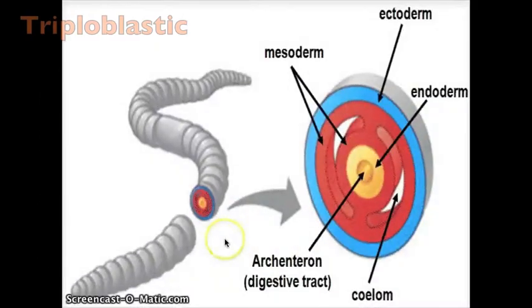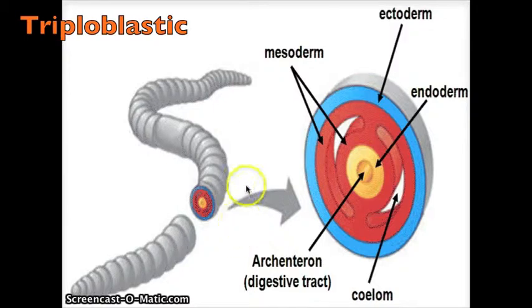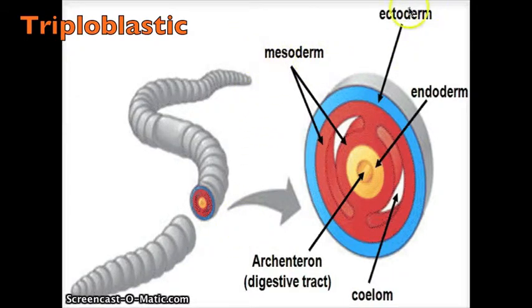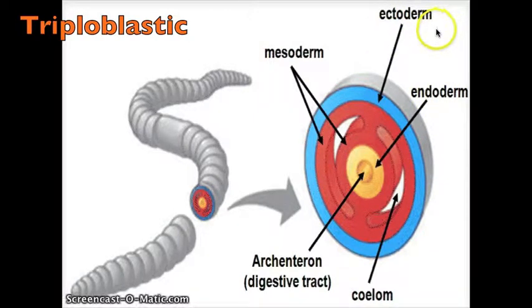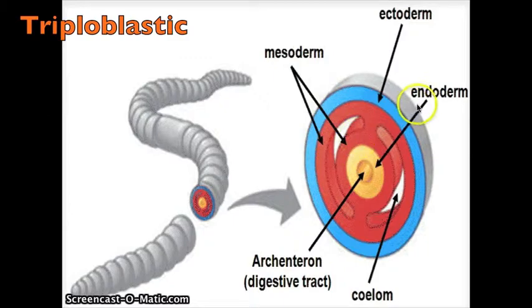This diagram shows a cross section of the layers within an earthworm. An earthworm is triploblastic, meaning there are three embryonic layers. They have the ectoderm, which is the outermost layer; the mesoderm, which is the middle layer; and then the endoderm, which lines the gut.